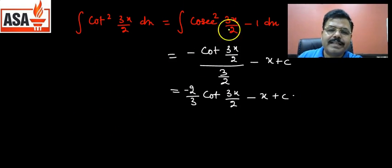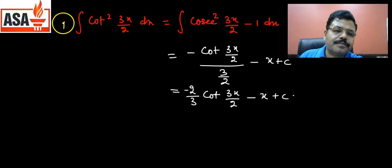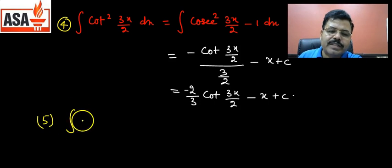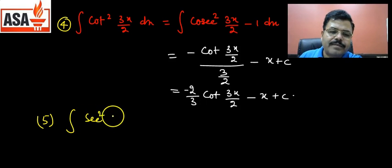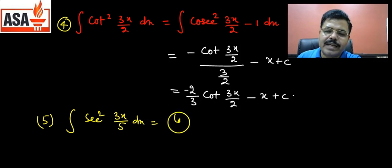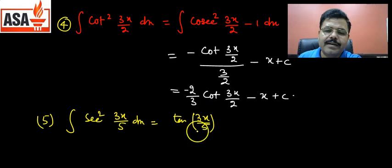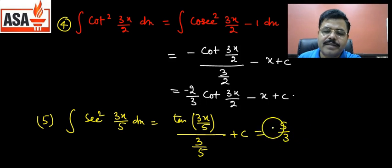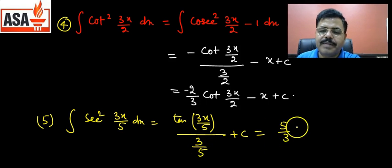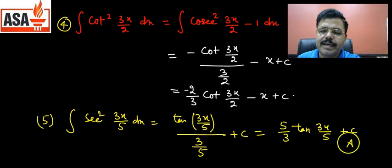Next, ∫sec²(3x/5) dx. Since sec²x integrates to tan x, we write tan(3x/5) divided by the coefficient 3/5, giving (5/3)tan(3x/5) + c. Another example: ∫cosec²(3x+5) dx = −cot(3x+5)/3 + c, since x's coefficient is 3.